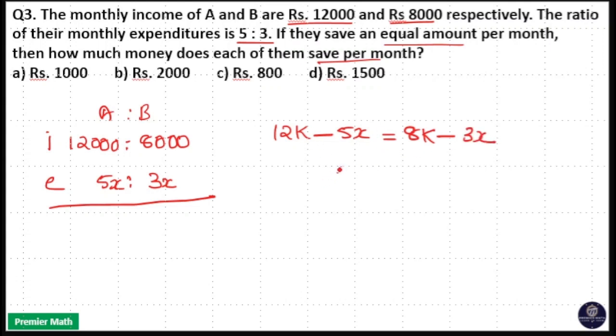Here, 12k minus 8k equals 4k. That is, 4,000 equals 2x. So x equals 2,000.